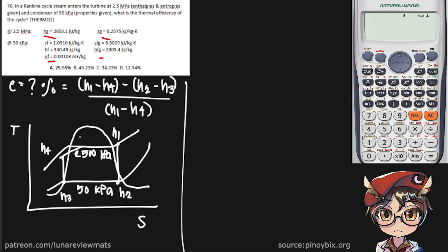So obviously, we have the steam entering our steam turbine. So h1 would be, on the 2.5 MPa pressure line, that would be 2,803.1 kJ per kg. And same for its entropy, 6.2575 kJ per kg Kelvin.